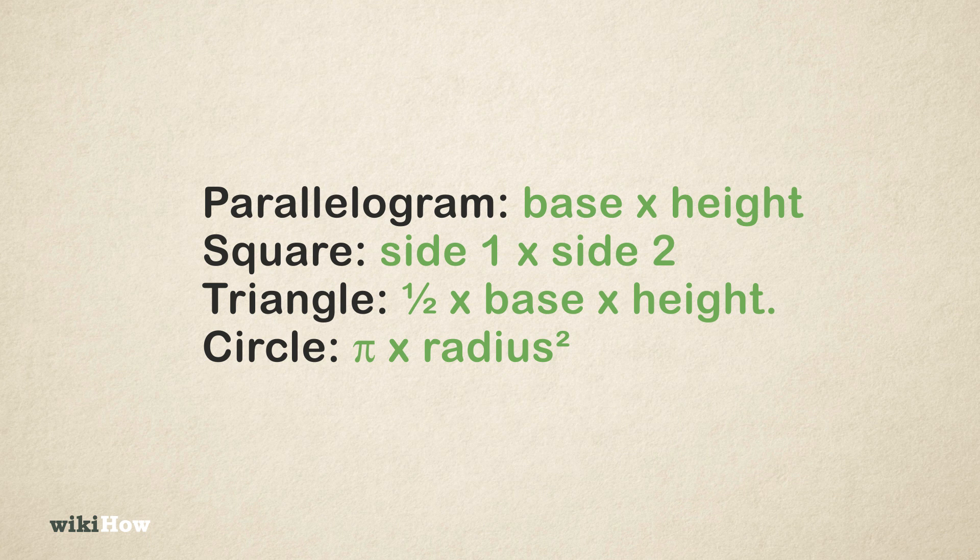Parallelogram: Base times height. Square: Side 1 times side 2. Triangle: Half times base times height. Circle: Pi times radius squared.